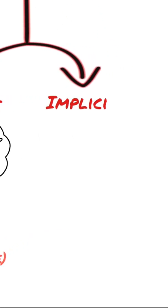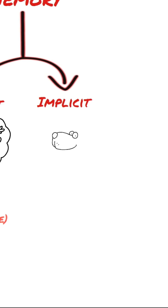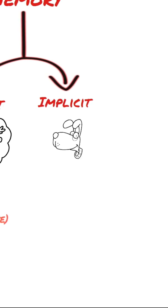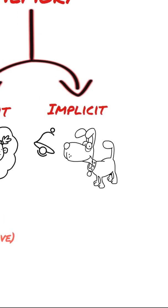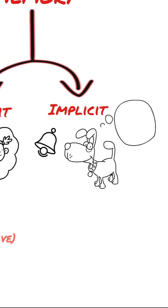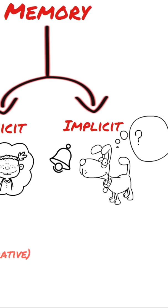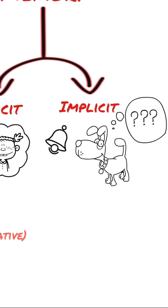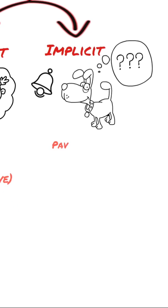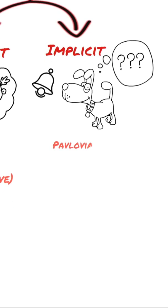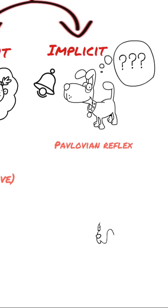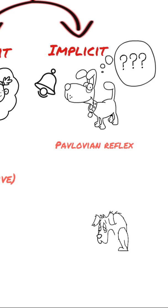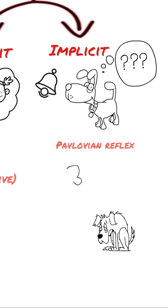But if it's an implicit memory, it's a non-declarative memory. It's not dependent on conscious recall — you can't exactly recall it. For example, a Pavlovian reflex.